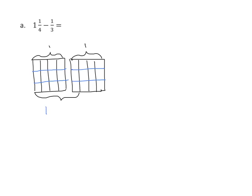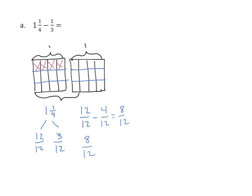We're going to write our 1 and 1 fourth and decompose that. We're going to look at the whole — we see that is 12 twelfths. And we'll look at our other part on the other rectangle: 1 fourth is the same as 3 twelfths. Again, we're going to subtract from the whole. So I have 12 twelfths, and I want to subtract 1 third. I can see that 1 third through this model is 4 twelfths. So we're going to subtract 4 twelfths and cross them out. We can see that 12 twelfths minus 4 twelfths is 8 twelfths. Now we need to add back what we have in the second rectangle, and that is 3 twelfths. If we add 8 plus 3, we get 11 twelfths.